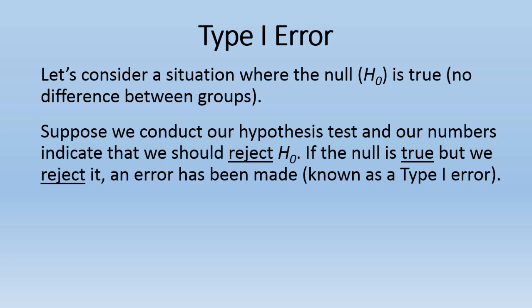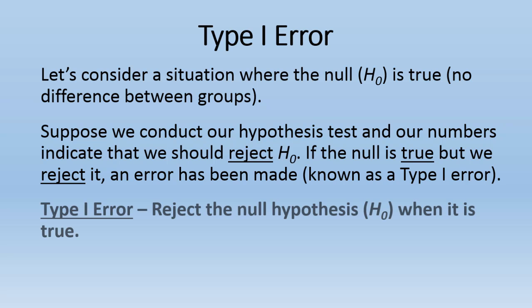When we reject the null when the null is true, that's known as a type 1 error. The formal definition: a type 1 error is rejecting the null hypothesis when it is true. In our example, there was really no difference in truth between males and females in how engaged they are on campus after their first year at the university, but our study led us to conclude that females were more engaged and that led us to reject the null. So we rejected the null when it was true — that's a type 1 error.